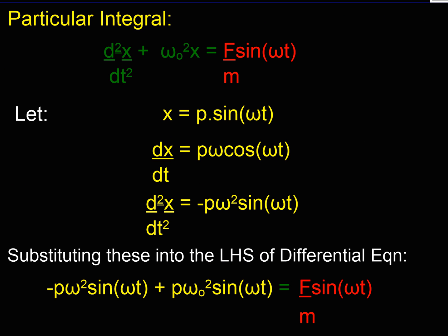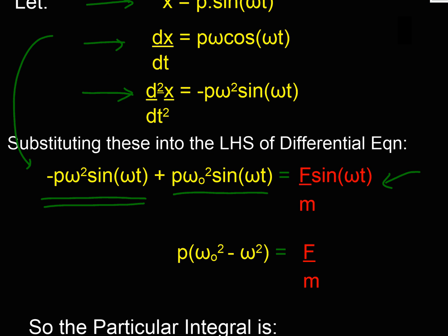I've got my particular integral. I'm going to try to solve this equation. Here's my trial function: x is p, some multiple of sin(ωt). That's my velocity. Second differential is my acceleration. If I substitute these into the left-hand side of my differential equation, I get my acceleration term and my spring term and I equate it to that. Therefore, I can get rid of the sin(ωt)'s and I get a bracket here, ω₀² (natural frequency) minus ω² (frequency of the forcing function).